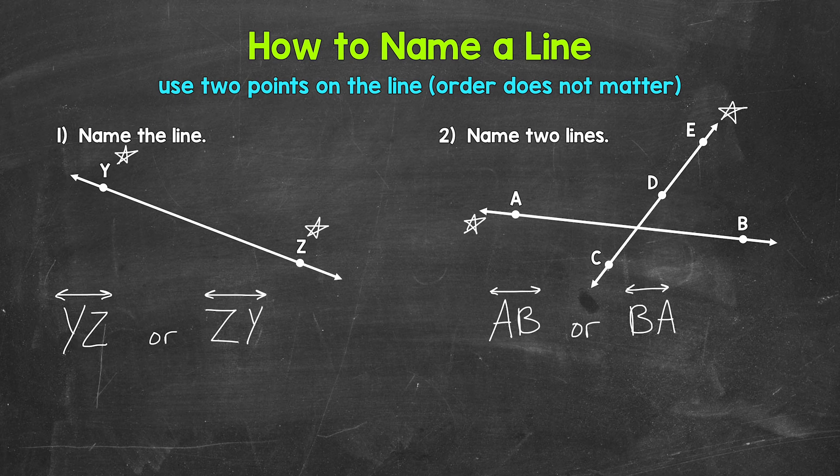So for example, we can name this line line DC, line DE, line CE, so on and so forth. Let's use point C and point E.